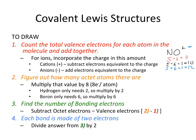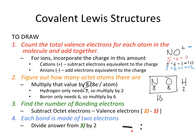Step two is to figure out how many octet electrons there are. Nitrogen and oxygen both require eight valence electrons to satisfy their octet, though there are exceptions like hydrogen, which only needs two. For a molecule with only nitrogen and oxygen, that's two atoms times eight, giving 16 octet electrons. Step three: find the number of bonding electrons. Step four: divide bonding electrons by two to get the number of bonds, since every stick represents a pair of electrons.